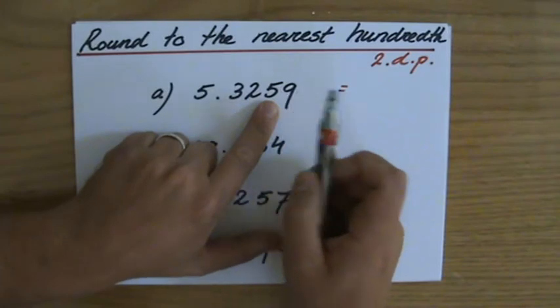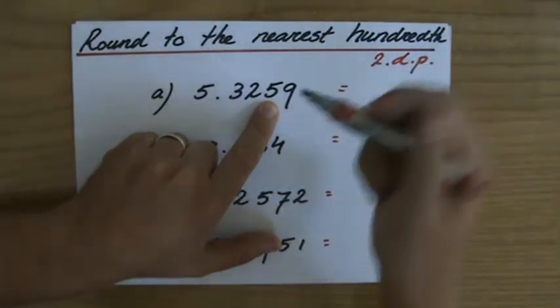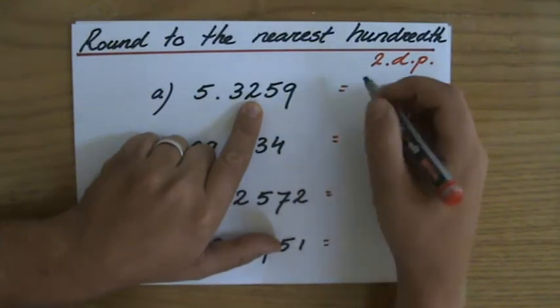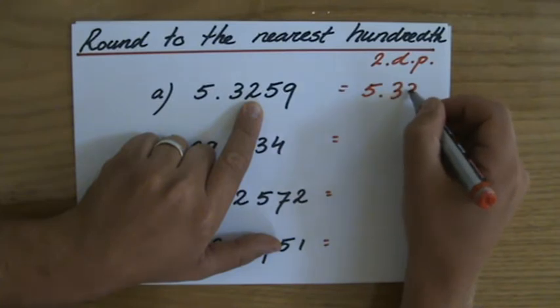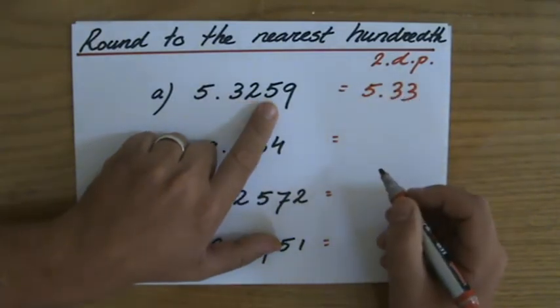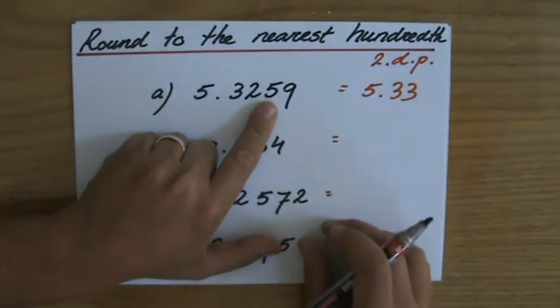Well, that depends on the next number. If it's a 5 or higher, 5, 6, 7, 8, 9, the 2 will go up. So I've explained this in previous videos. In this case, it's going to be 5.33, because the 2 goes up to a 3 because of that 5. I don't care about the rest of the numbers, just about the next one.